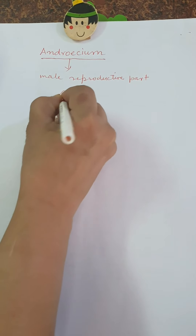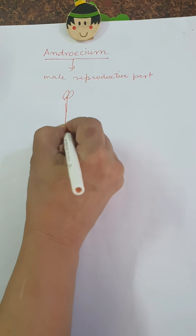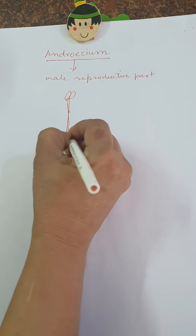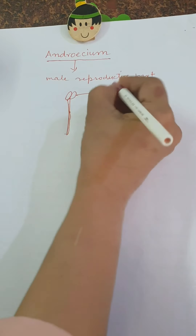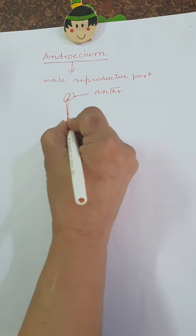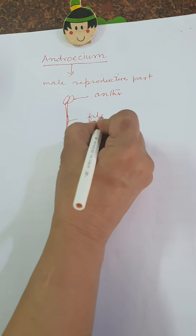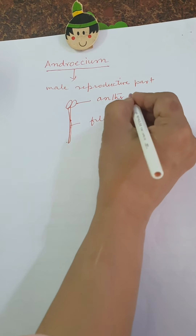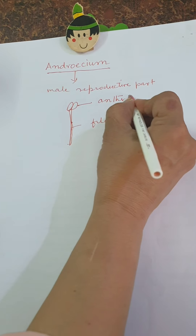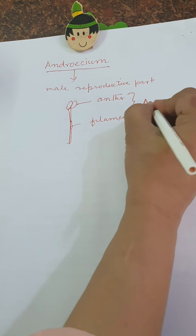It consists of a bi-lobed anther and a long filament. The filament is a long tube-like structure. This male reproductive organ comprises the androecium of the flower.